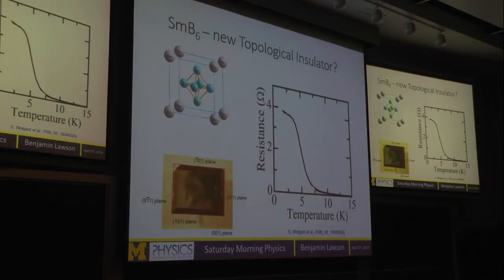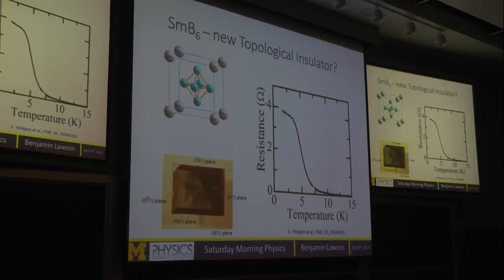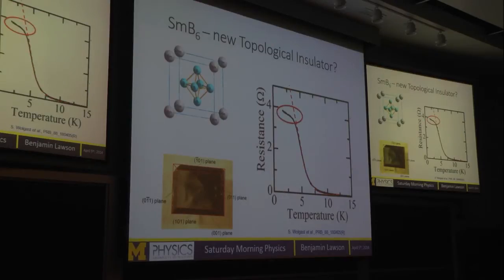Next to it there's a plot of resistance versus temperature taken by a group at the University of Michigan on SMB6. As it gets colder, the resistance goes up — something you'd expect from an insulator. But a normal insulator would continue to rise until electrons can't pass through at all. Instead, we see a saturation at the top — a point where electrons are still allowed to pass through even when very cold. We believe this is because electrons are still allowed to pass along the surface, even though they're not allowed to pass through the bulk.